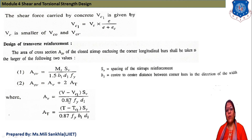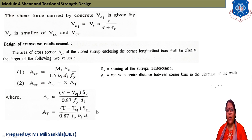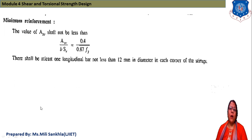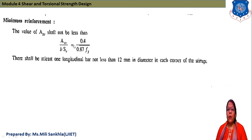ASV = AV + 2AT, where AV = (V − VC1) × SV / (0.87 FY D1) and AT = (T − TC1) × SV / (0.87 FY B1 D1). These are the equations for AV and AT as given in the code.